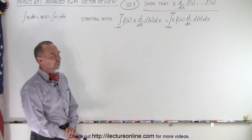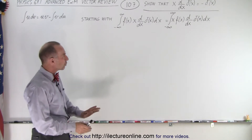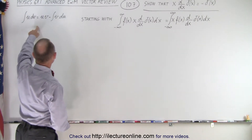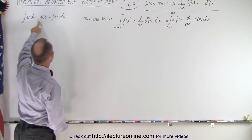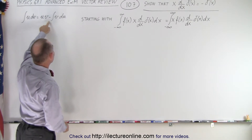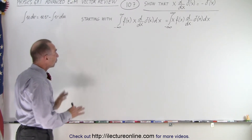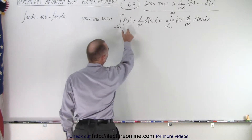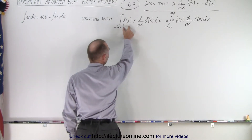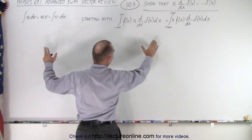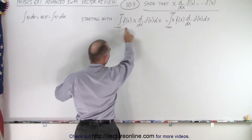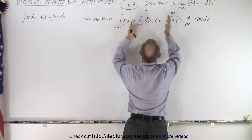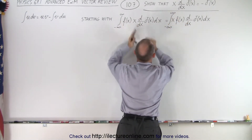How do we show that? The trick is by using integration by parts, where we know that the integral of u dv is u times v minus the integral of v du. We're going to start with some arbitrary function defined over all values of x, f of x, and multiply it times this form of the delta function times dx.